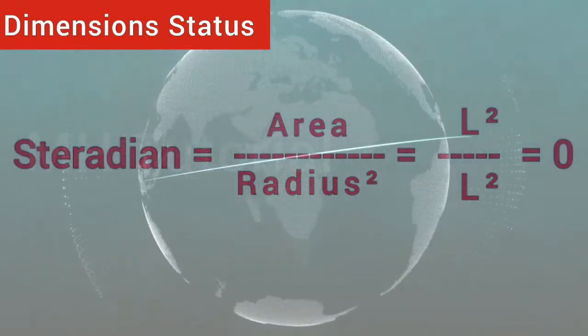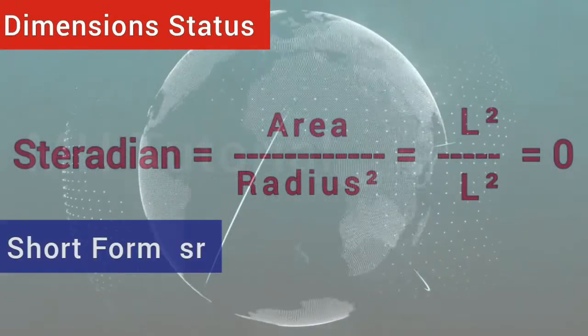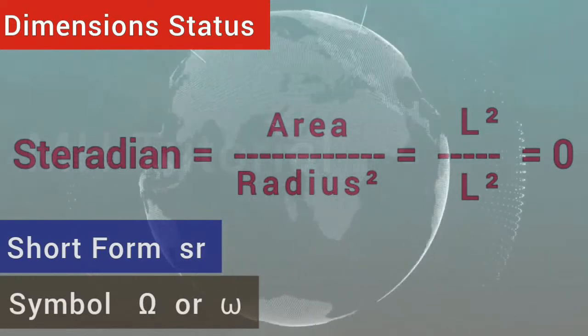Steradian is a zero dimensional unit. It is expressed in SR and denoted in Greek alphabet, Omega.